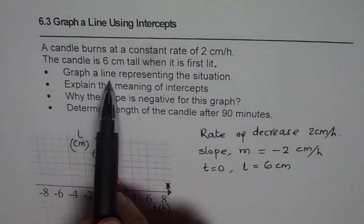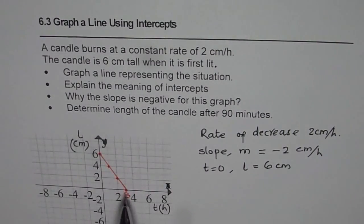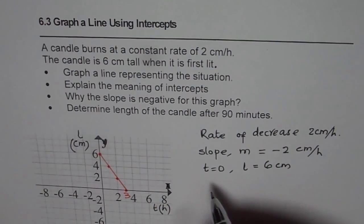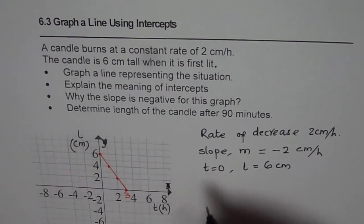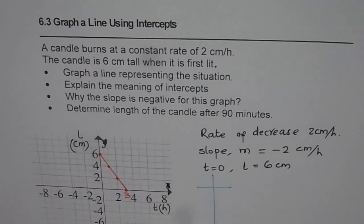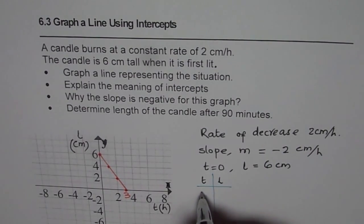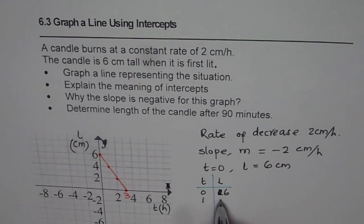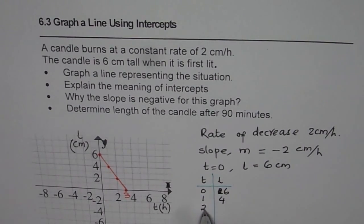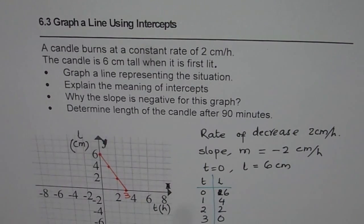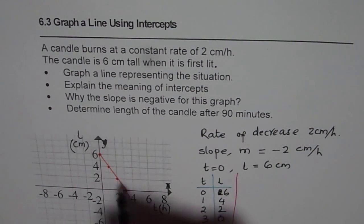Anyway, graph a line representing the situation. We just did it. You could do it by calculating a table of values, making a table of values. For example, you can say t and length of the candle. Starting value is 6 centimeters. And every hour, it decreases by 2. So it would be 6 minus 2, that is 4. Second, 4 minus 2, 2. Third, 2 minus 2, 0. You get these points and you could do like that also. So that's an alternate way of doing it. I prefer the way we did, right straight on the graph.